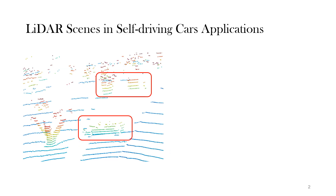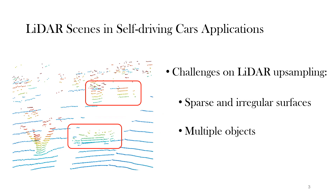Currently, as shown in the picture, point clouds from LiDAR are often sparse. To reduce the impact of this sparsity, one potential solution is to use upsampling methods to densify the sparse surface. However, the current upsampling method faces two challenges. First, LiDAR point clouds are usually sparse and irregular. Second, LiDAR scenes are complex and contain multiple objects. As a result, LiDAR upsampling is still an open question to be resolved.